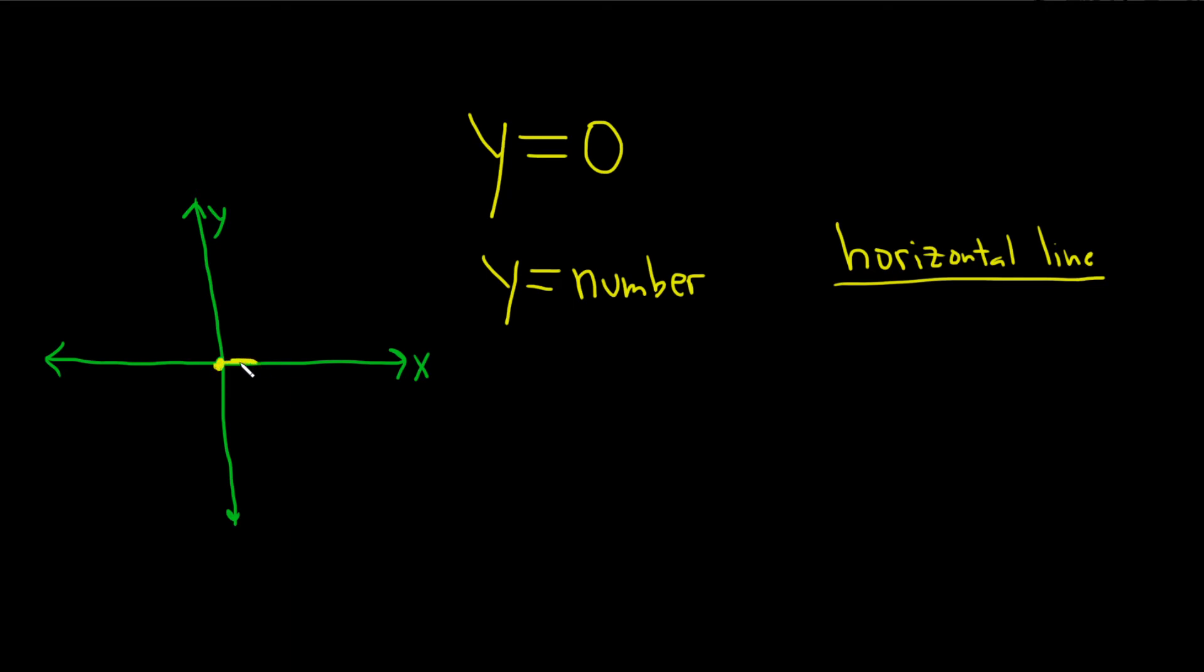And then it's just a horizontal line at 0, so it's just right here, y equals 0, y is always 0.